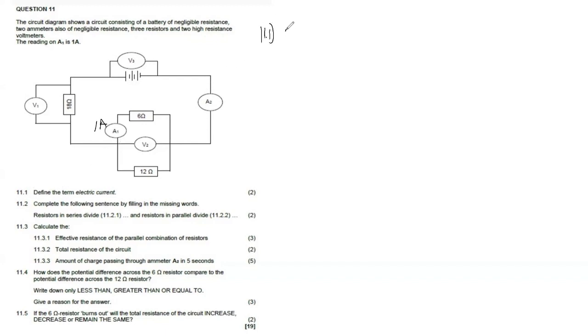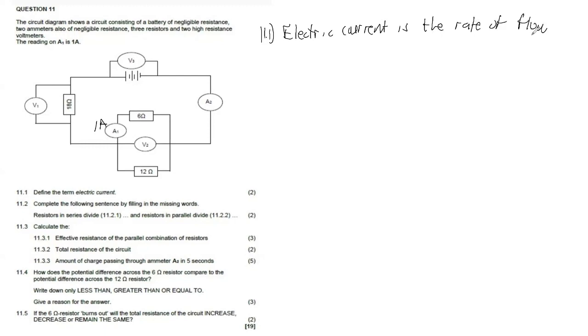So 11.1 says define the term electric current. The electric current is the rate of flow of charges.